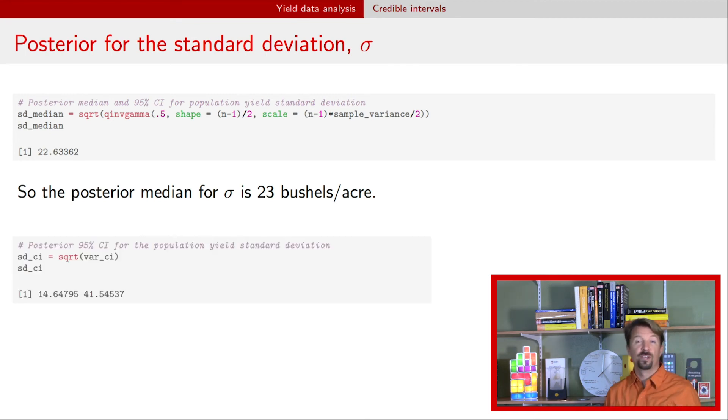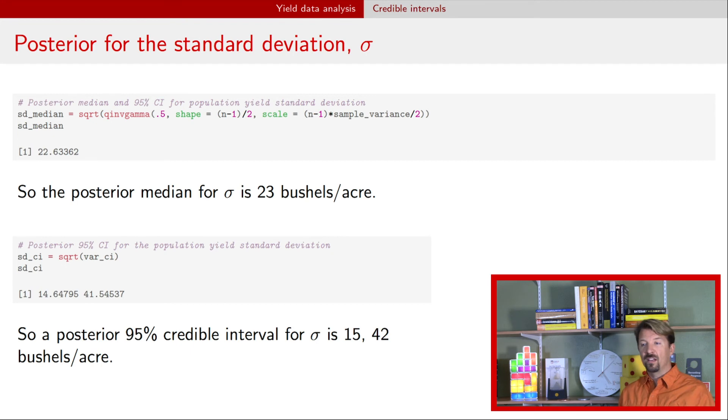We can get credible intervals as well. And the way that we get credible intervals is we find the credible interval for the variance, and we just take the square root of the endpoints. And when we do that, we can find that the credible interval here is between 15 and 42 bushels per acre. So that variability, our belief, is 95% that it is between 15 and 42.